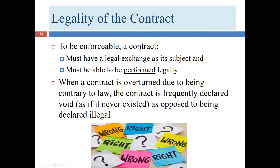Usually if either one of these items is missing, the contract will be declared void — as if it never existed — and the court won't even get involved in returning the parties to their original status. Most of the time the court will say you're both guilty in this situation, so we're not going to sort through what you want to keep or give back. You're stuck with wherever you landed in this matter.